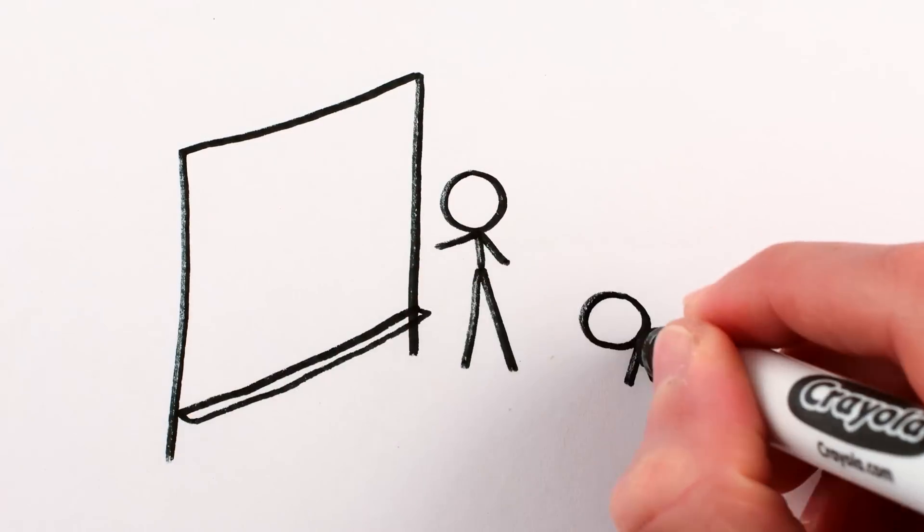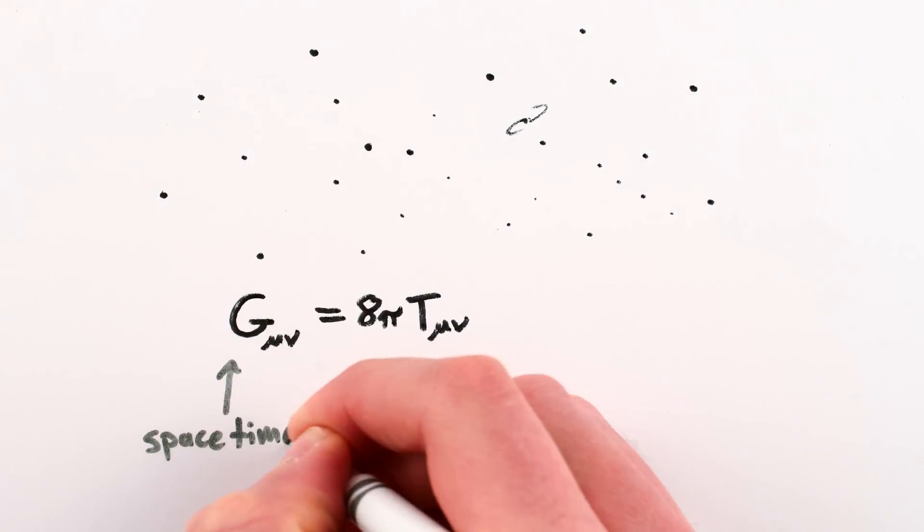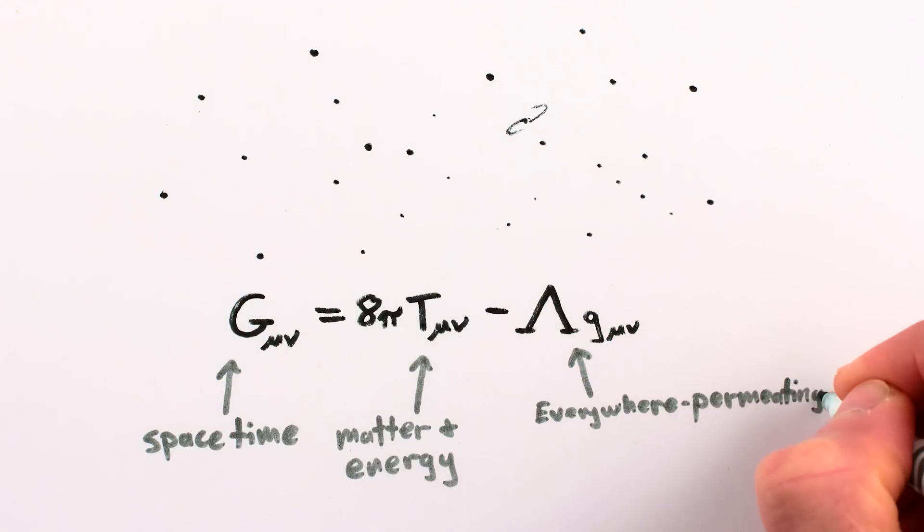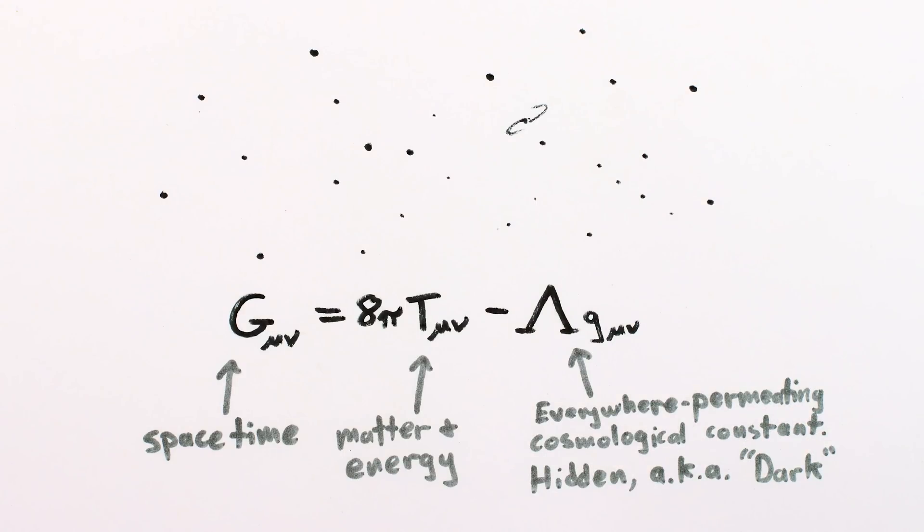P.S. We have a few basic ideas for why the universe is accelerating, but we still don't really know why it's happening. One of the simplest and most popular ideas is that there's an everywhere-permeating vacuum energy with negative pressure, which we've never detected in any way other than by measuring the acceleration of the universe – so we call it dark energy.